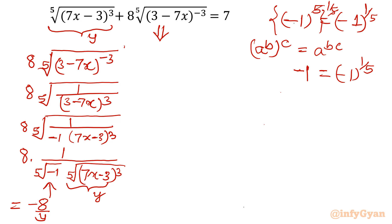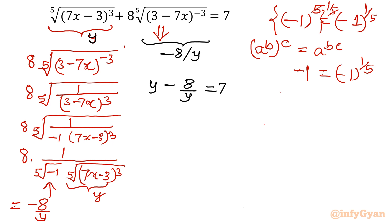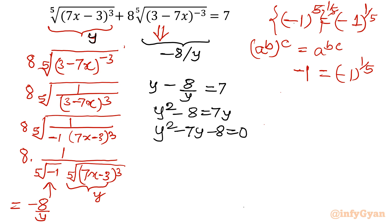Let us substitute back into the original equation. The first term is y and the second term is minus 8 over y, giving us the equation y minus 8 over y equals 7. Multiplying through by y gives y squared minus 8 equals 7y. Taking all terms to the left-hand side: y squared minus 7y minus 8 equals 0. This is a quadratic equation in y.